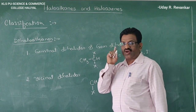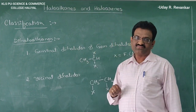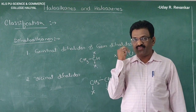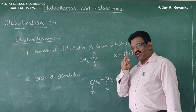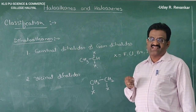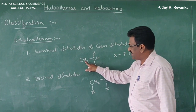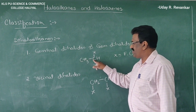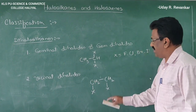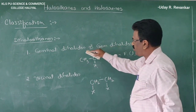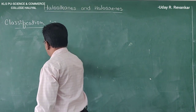Whenever you are writing organic compounds, remember: carbon always forms four bonds, nitrogen always forms three bonds, oxygen always forms two bonds, hydrogen always forms one bond, and halogens also form a single bond. Next is polyhalogen compounds.